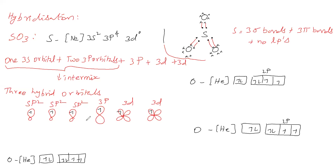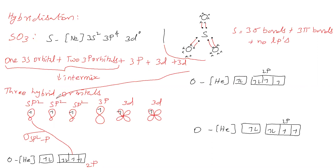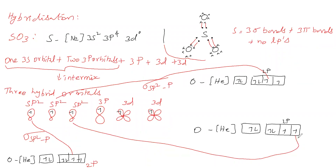Now going for bonding: the sp² orbital of sulfur and the p orbital of the first oxygen undergo axial overlapping to give a sigma bond. Similarly, the sp² orbital of sulfur and p orbital of the second oxygen undergo axial overlapping to give another sigma bond. The sp² orbital of sulfur and p orbital of the third oxygen also form a sigma bond.